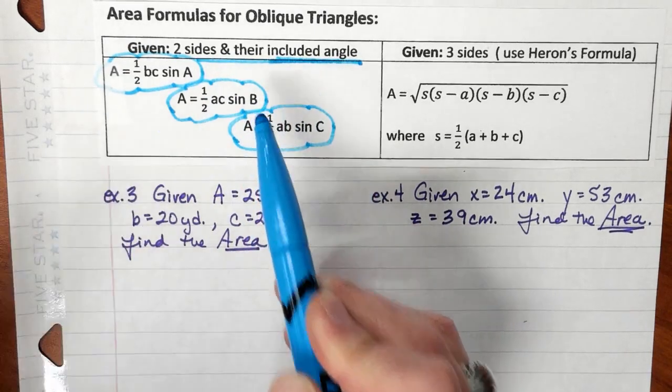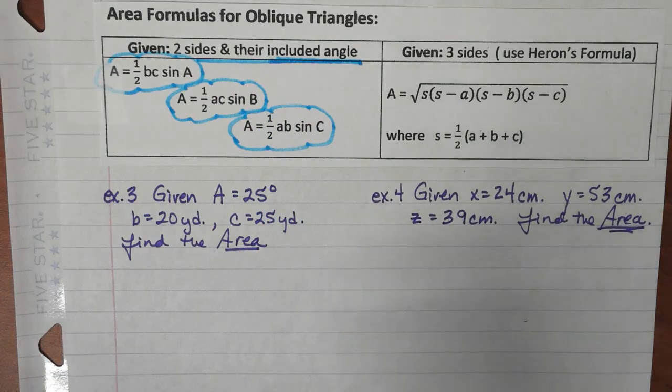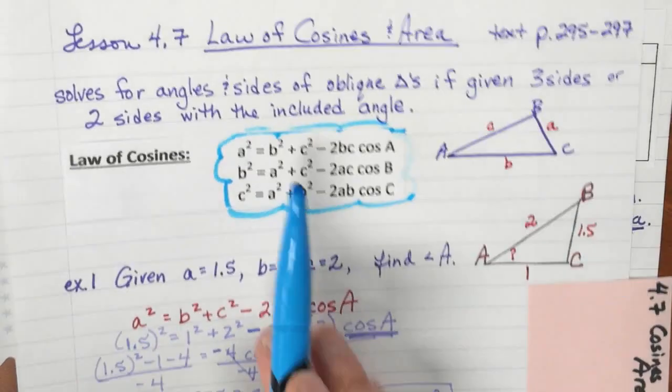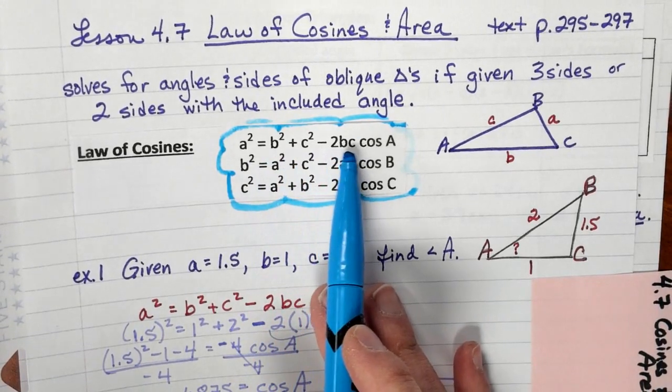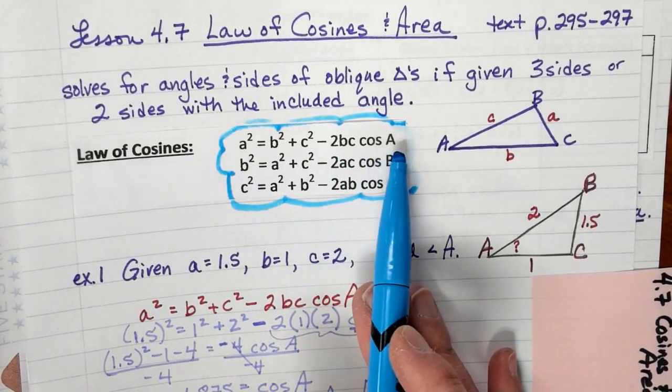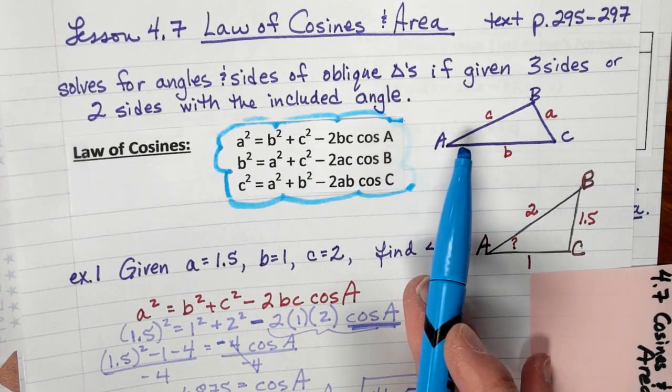Remember when we did part one of this lesson, we did two sides squared minus two times the same product of the cosine of the angle when they were included. So it's a similar formula but not quite exactly the same.